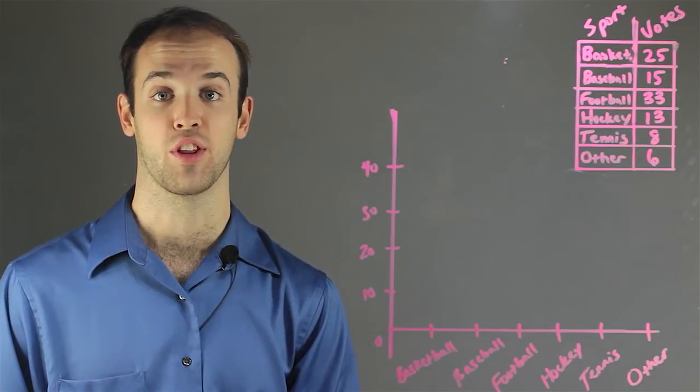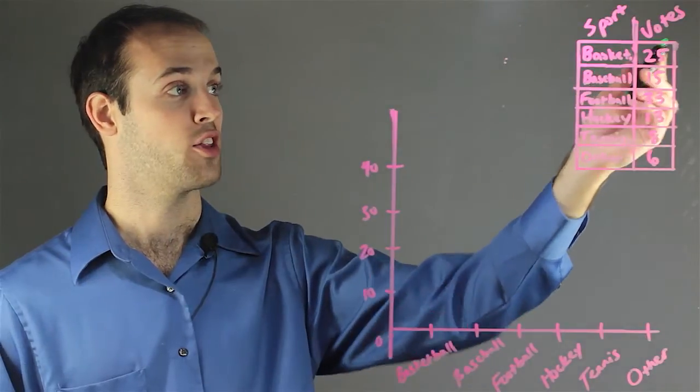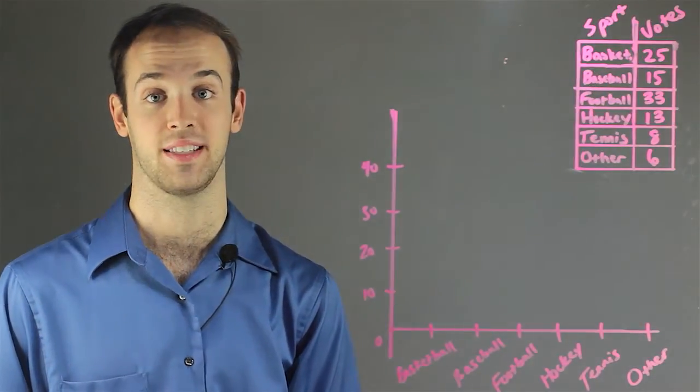The first thing you want to do is start out with a chart, and in one column put the sport, and in the other, put the number of votes that it got. So I asked about six sports.